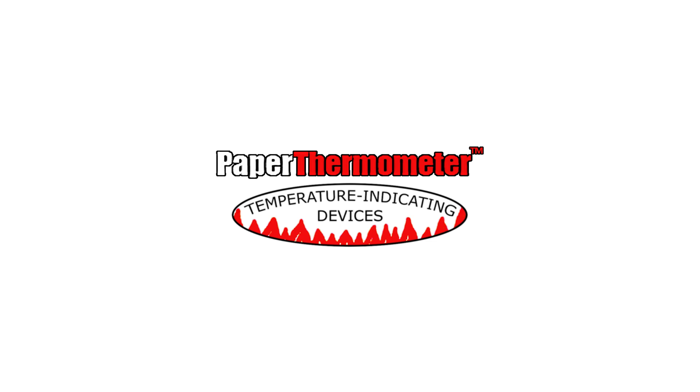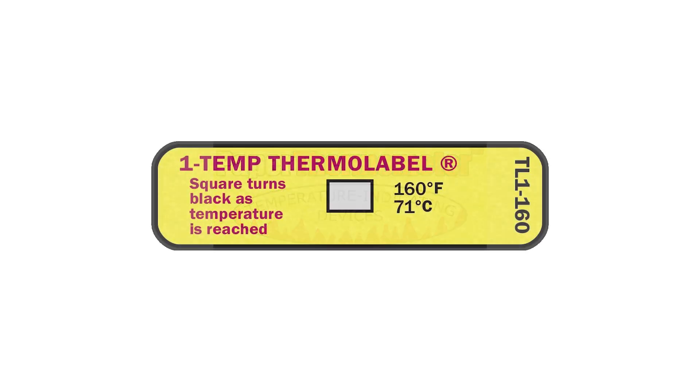Our most popular label to verify dishwasher sanitation is the OneTemp Thermal Label TL1160. This has a temperature sensitive square that changes from white to black when the surface on the label reaches 160 degrees Fahrenheit.